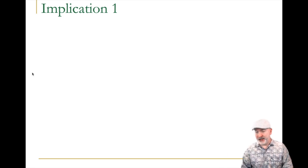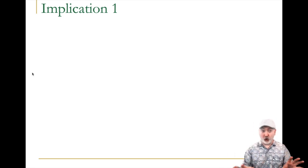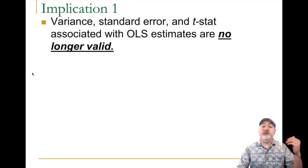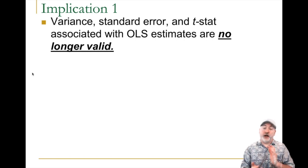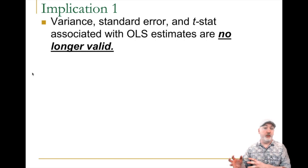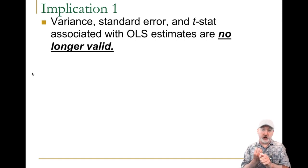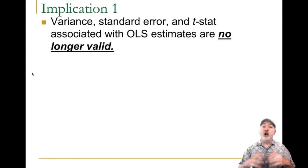Now the question is how worried do we need to be? What are the consequences of estimating our model with this violation? We have to go back to those derivations under the Gauss-Markov assumptions, where we had a specific formula for the variance of the OLS estimator — the variance of our B1-hat. That formula worked by imposing the assumption of a constant error variance. Once that assumption goes away, that whole derivation was incorrect. The bottom line is the variance of the OLS coefficient estimator, the standard error, the t-statistic, the p-value — all of our hypothesis testing conclusions — are now entirely invalid.